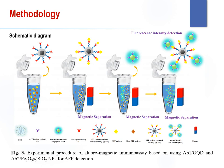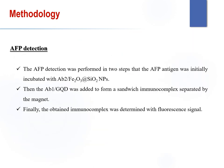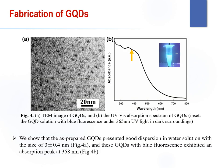Figure 3 shows the experimental procedure of the fluoromagnetic immunoassay using AB1-conjugated GQD and AB2-conjugated iron oxide silica nanoparticles for AFP detection. The AFP detection was performed in two steps: AFP antigen was initially incubated with AB2-conjugated iron oxide silica nanoparticles. Then, AB1-conjugated GQD was added to form a sandwich immunoassay complex, separated by the magnet. Finally, the obtained immunoassay complex was determined with a fluorescence signal.